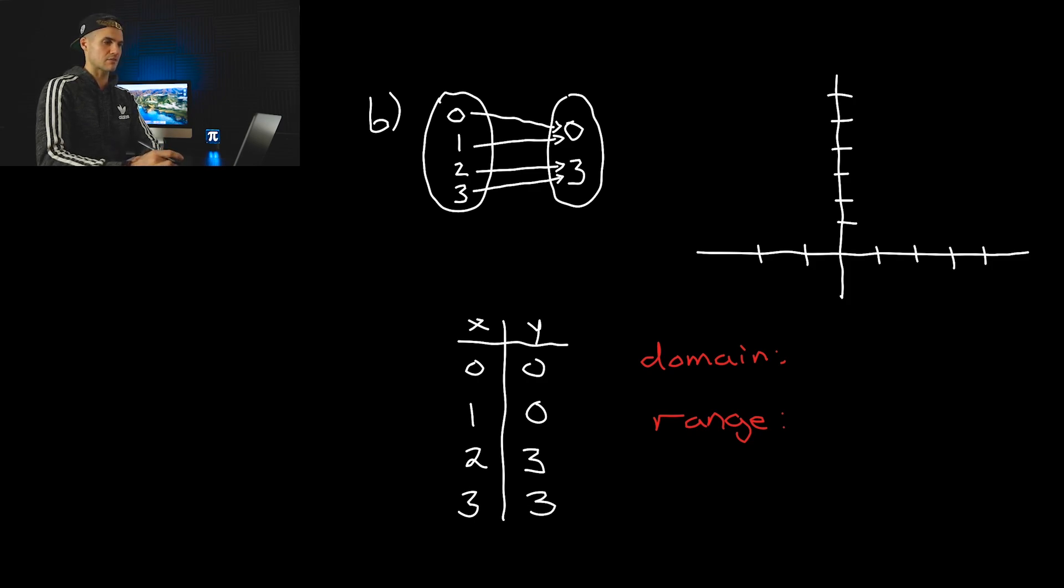So from here we just have to plot these. Zero and zero at the origin. We have one and zero, then two and three, and three and three. So what's the domain? Very simple. Zero, one, two, and three. Range, the y values, the zeros are repeating, we only write them once. The threes are repeating, we only write them once. Is this a function or not? It does pass the vertical line test. There is no multiple sets of points that share the same x value. So this relation is indeed a function.